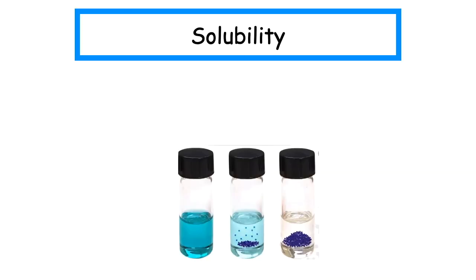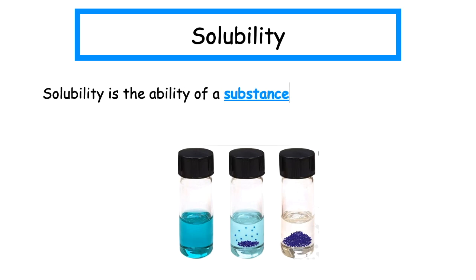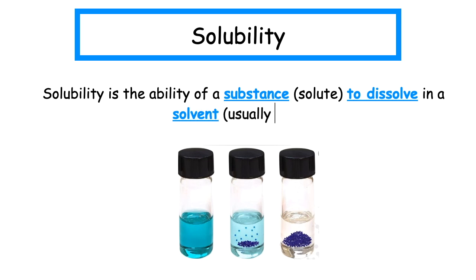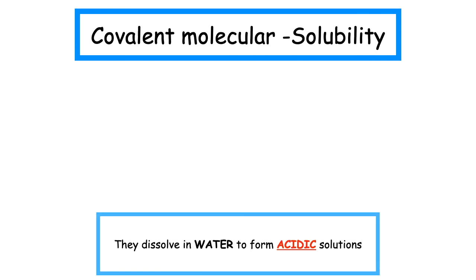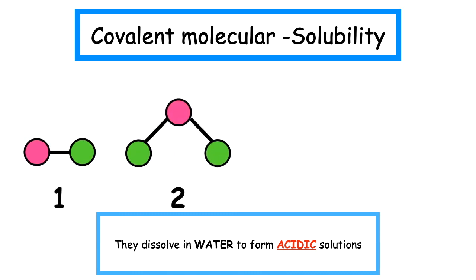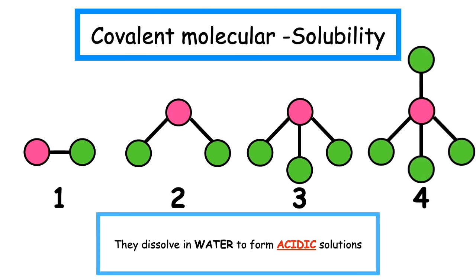The last property we look at is solubility — the ability of a substance (the solute) to dissolve in a solvent, which is usually a liquid. If it is able to dissolve, we say the substance is soluble; if unable to dissolve, it is insoluble. At this stage, all we need to know is that covalent molecular substances dissolve in water to form acidic solutions, which we'll explore further in the acids and bases section.